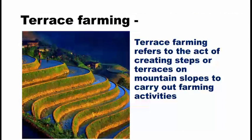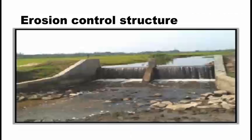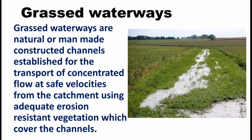Terrace farming refers to the act of creating steps or terraces on the mountain slope to carry out farming activities. Several erosion control structures are also constructed for preventing soil erosion — they reduce the runoff velocity and store water, hence increasing infiltration into the soil. Grassed waterways are man-made channels which contain vegetation cover for decreasing the velocity of water and hence reducing soil erosion.